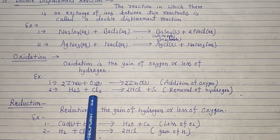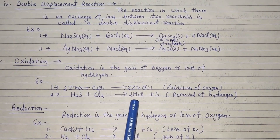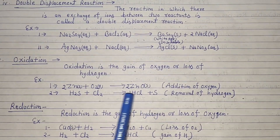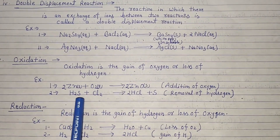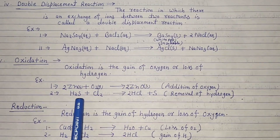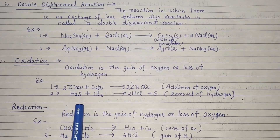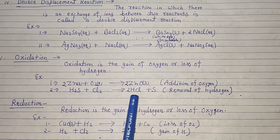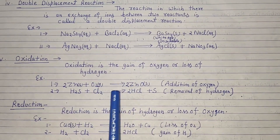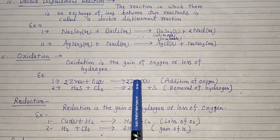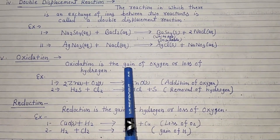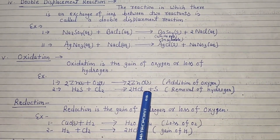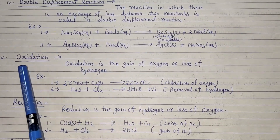Next example: hydrogen sulfide plus chlorine gives hydrogen chloride plus sulfur. Hydrogen sulfide has lost hydrogen, so the reaction where oxygen is gained or hydrogen is lost is called oxidation.